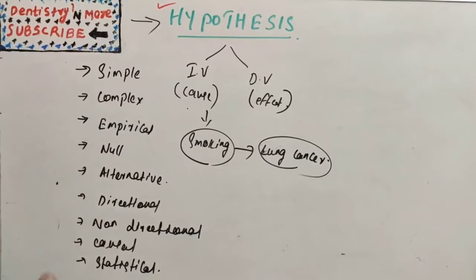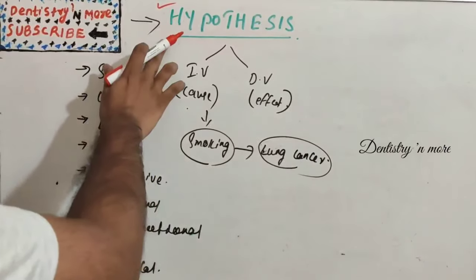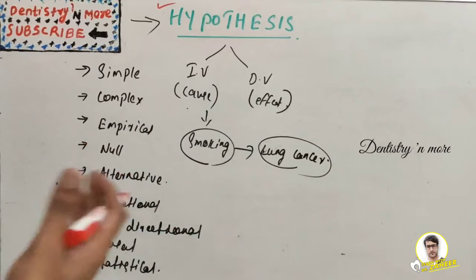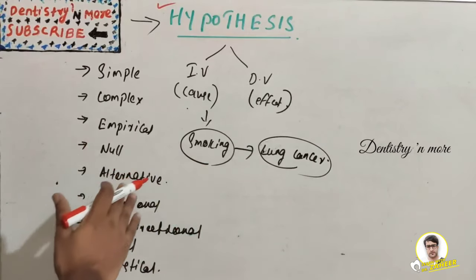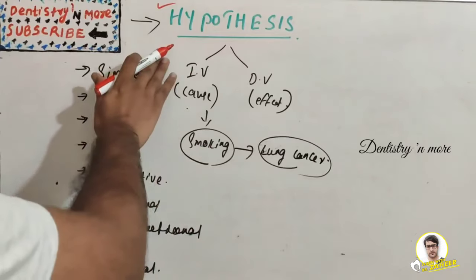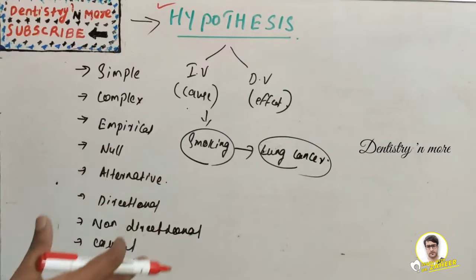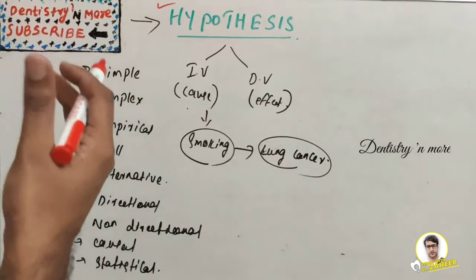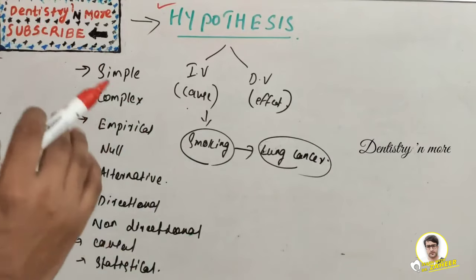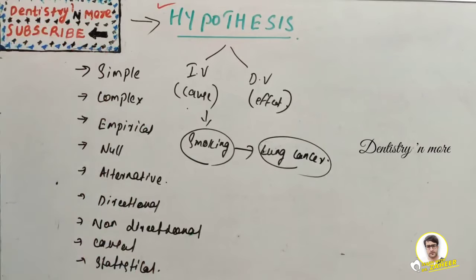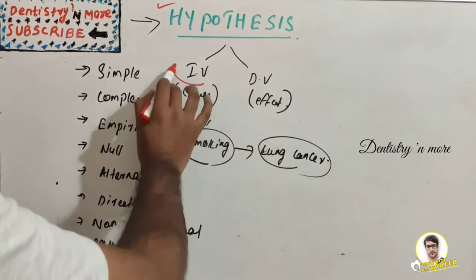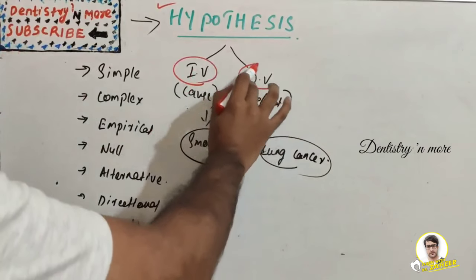Hello everyone, welcome back to another session in Dentistry and More. Today we have a different topic: hypothesis. It's not much important in undergraduation, but sometimes you can expect a question like null hypothesis or alternate hypothesis. It's very important in post-graduation while doing a thesis or short study. This video is about the classification of hypothesis. In any study, we have two variables: the independent variable and the dependent variable.